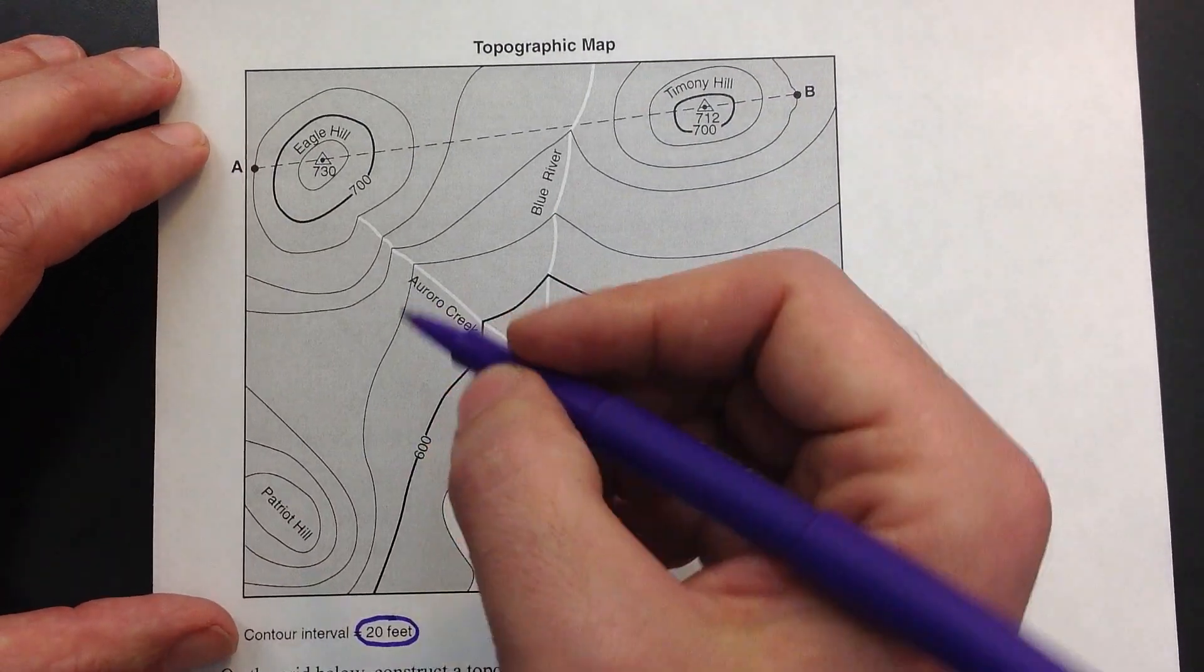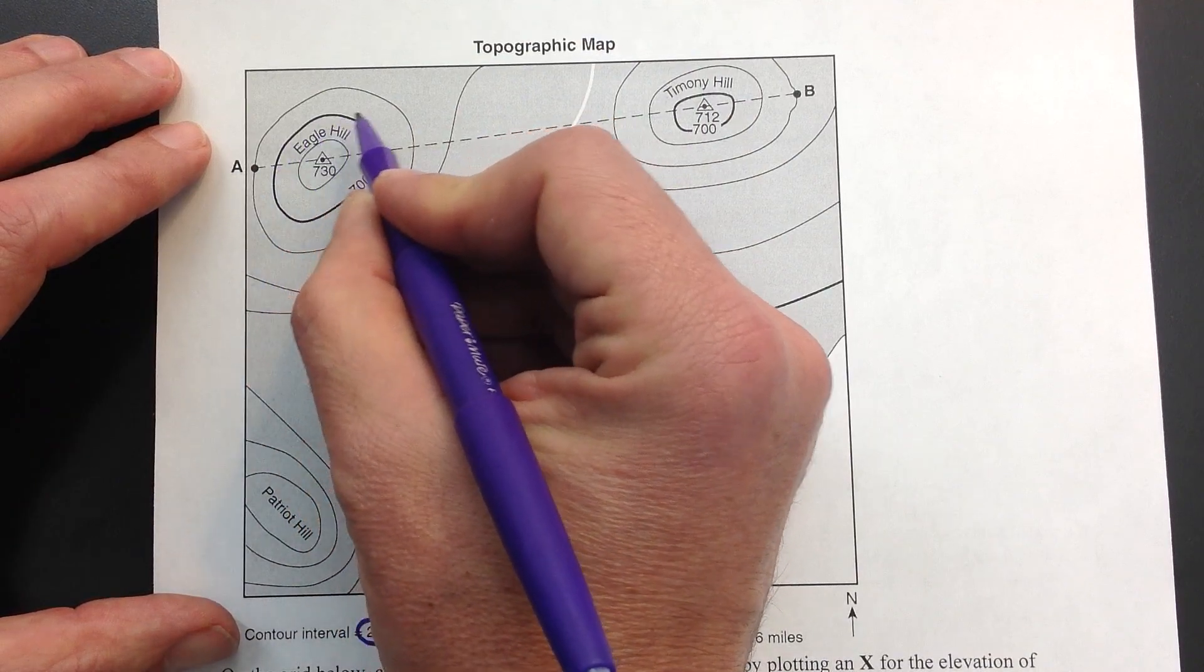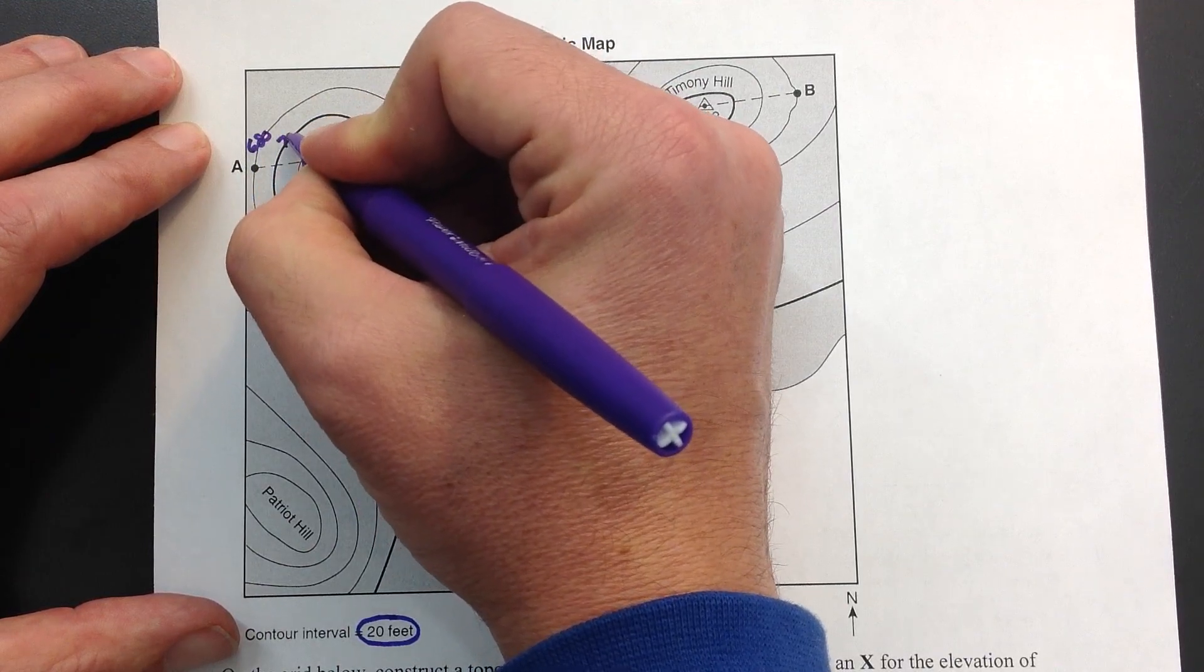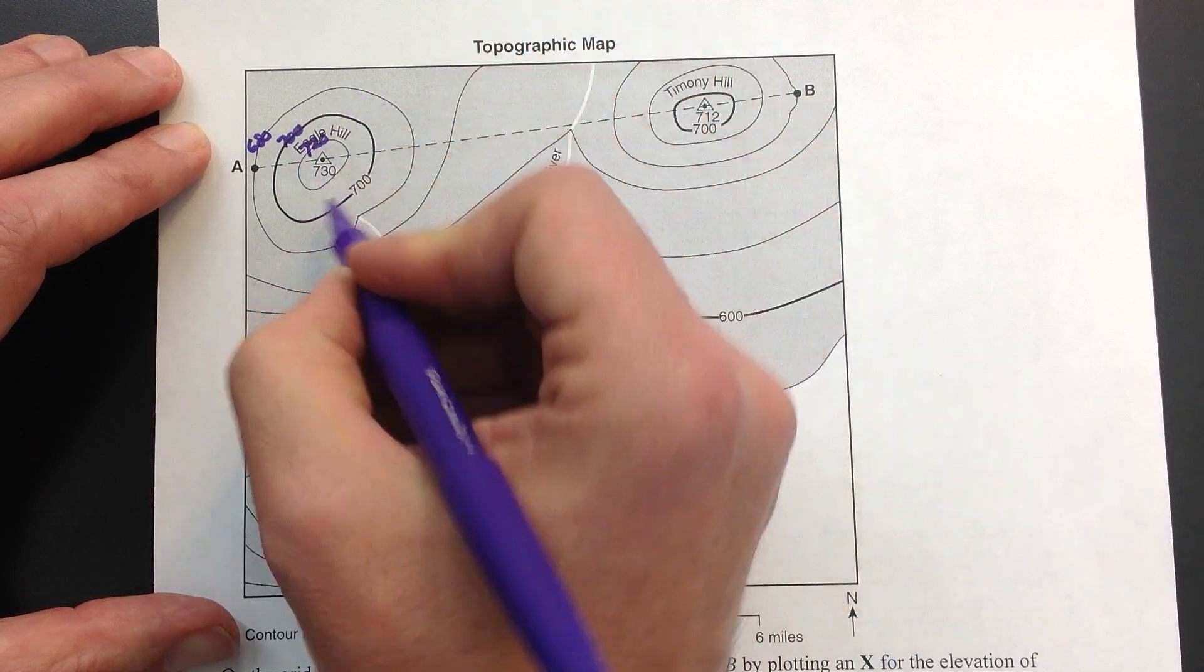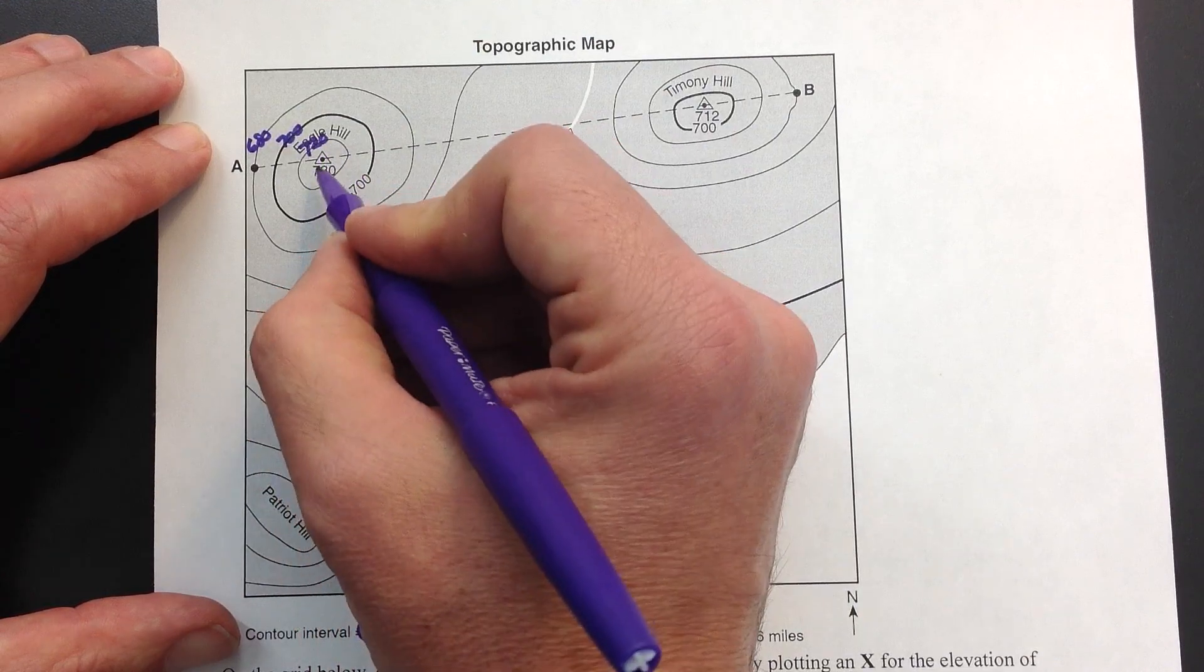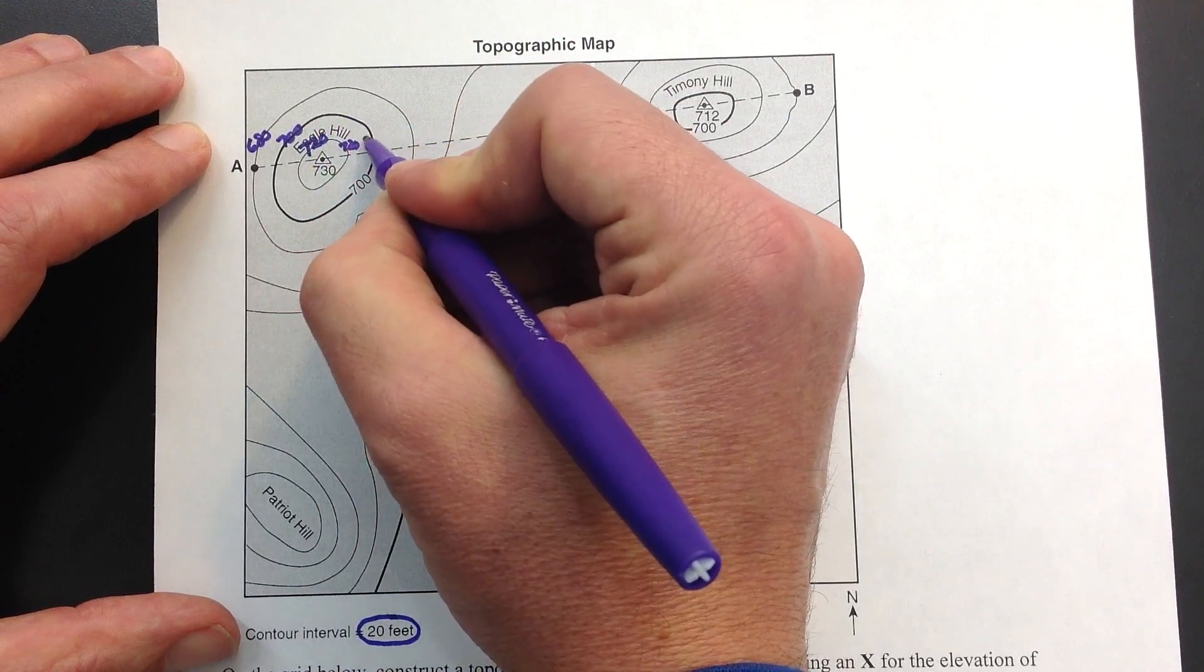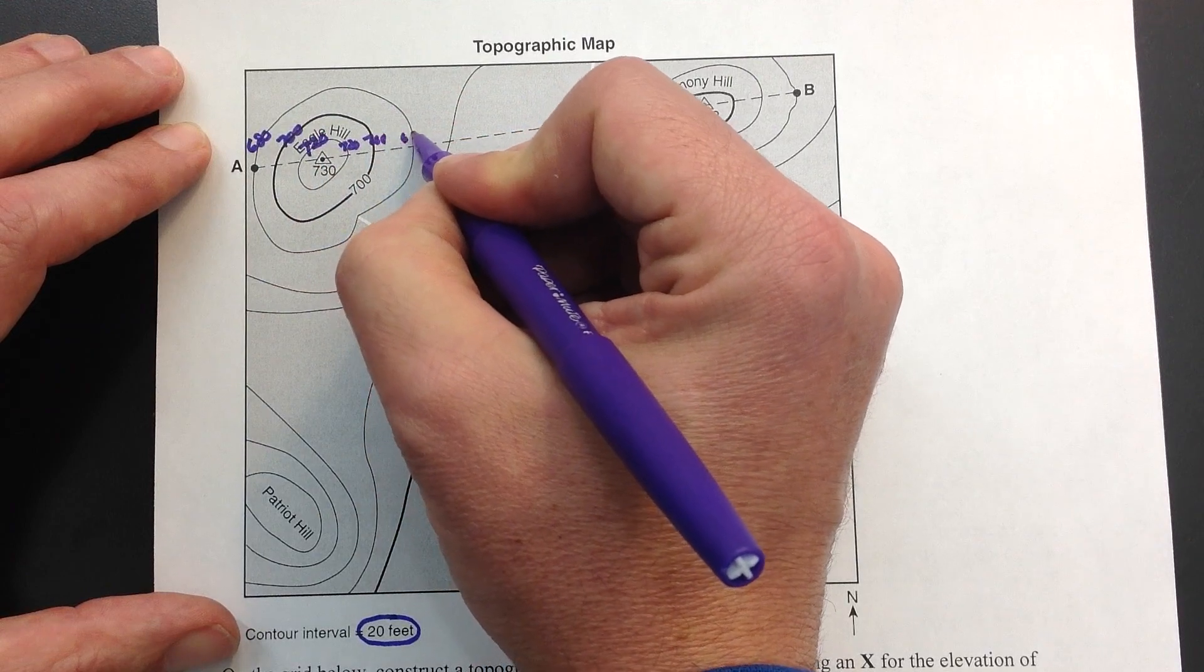So if I'm going by 20 foot increments, this line already has an elevation, so this is my 700 line. So this must be 680. So I'm going to write down 680, 700, 720. Don't worry about that little triangle, that just tells you how tall that hill actually is. So this line right here is 720. This line here continues to 700. This line right here is 680, we're going down the side of the hill.